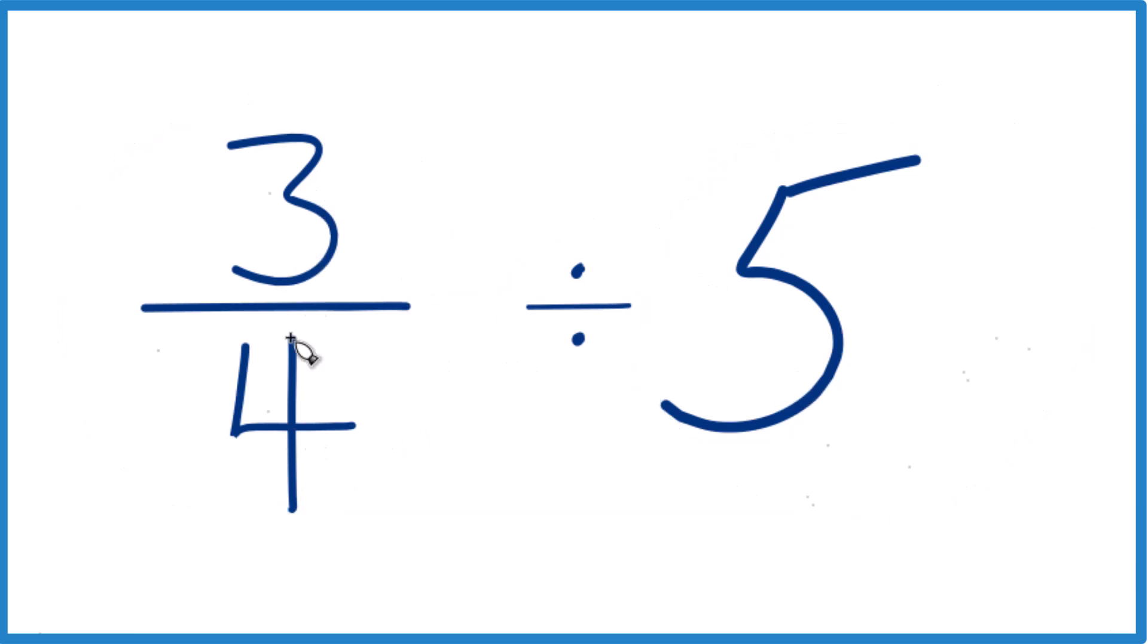So 3 fourths, that's less than 1. It's actually 0.75. We're trying to see how many times 5 fit into 3 fourths. And because of this number being less than 1, we know we're going to end up with a small number, another fraction. So keep that in mind.